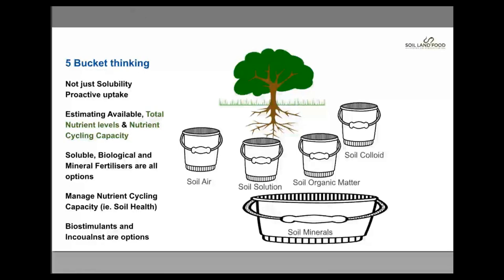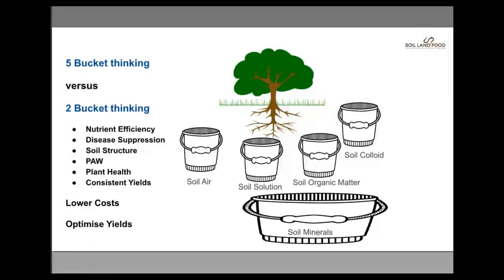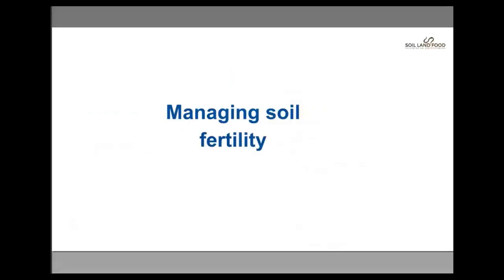Sometimes people use biostimulants and inoculants to help stimulate that cycling process, with varying degrees of success. So there are more tools, apart from soluble fertilisers, to manage fertility when you look at it more holistically. Two-bucket versus five-bucket thinking: we're aiming for nutrient efficiency, disease suppression, soil structure, plant available water, plant health and consistent yields. Benefits of a more holistic approach might include lowering your cost base and optimising plant health and yields, which in the long term can lead to profit — as you do see when people successfully build soil health.